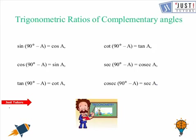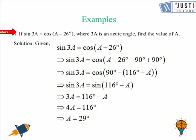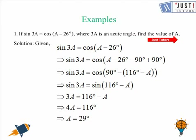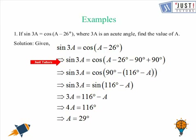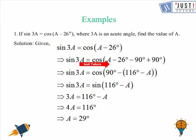Now let us try some sample problems. Question number 1: if sin 3A = cos(A − 26°), where 3A is an acute angle, find the value of A. We are given sin 3A = cos(A − 26°). To find the value of A, we need to equate the angles, which we can only do if we have the same operator. So we will try to change the right-hand side by adding and subtracting 90 degrees.